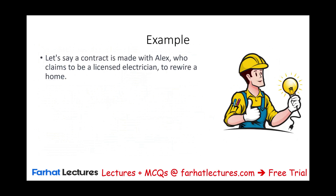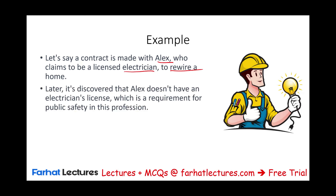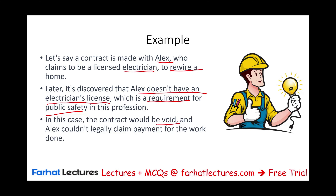For example, say a contract is made with Alex, who claims to be a licensed electrician, to rewire a home. Later it's discovered that Alex does not have an electrician's license, which is required for public safety. In this case, the contract could be void and Alex could not legally claim payment for the work done. Whether you choose to pay them or not is a different story, but the contract itself is void.